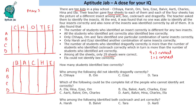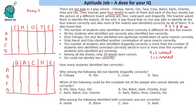It is also given that the number of students who identified an insect correctly is different for any 2 insects. So for all insects the number has to be different. No insect can have 10 correct. If we try combinations like 6, 7, 8, 9 we get 30, but we need 29 — that's 1 less than 30. So trying 9 as the maximum: if we try 6, 7, 8 we get 21, and to make 29 we need 8 more, which would repeat 8. Therefore there must be an insect identified correctly by 9 people.